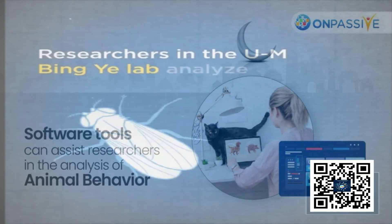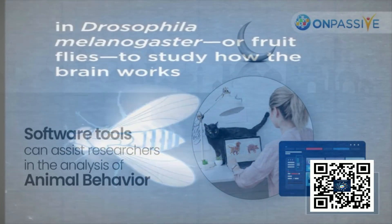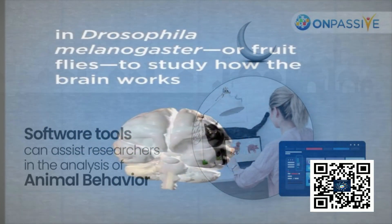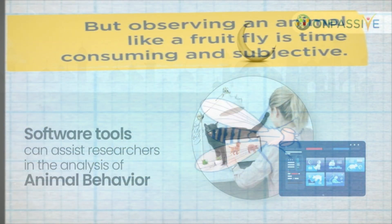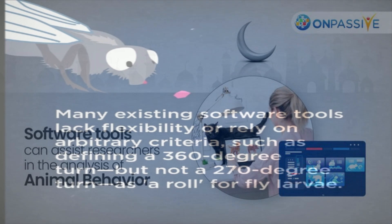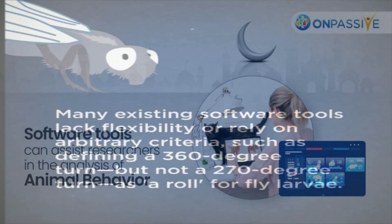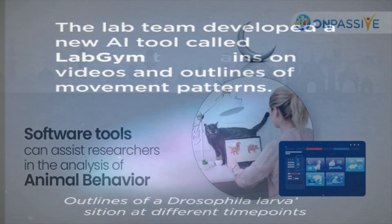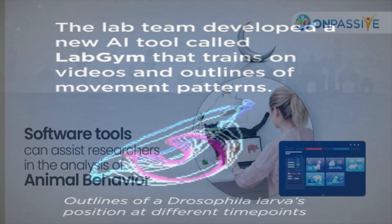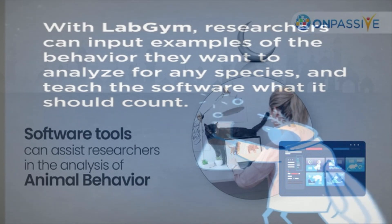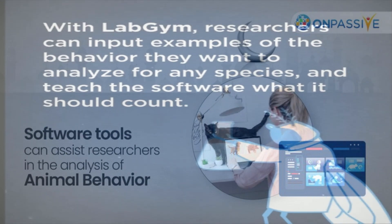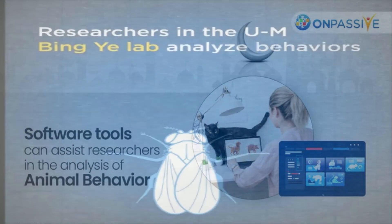A new open-source application simplifies animal behavior studies by leveraging the power of artificial intelligence. A team from the University of Michigan has created a new software tool called LabGym to help researchers in the life sciences evaluate animal behavior more efficiently. The open-source software uses artificial intelligence to discover, categorize, and measure prescribed actions across multiple animal model systems.